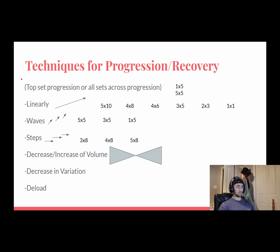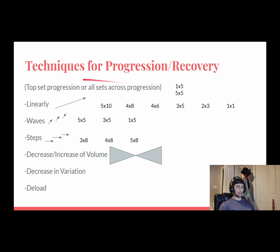Here are different techniques for progression. Once you've found your exercises, you apply a progression method. You don't have to strictly follow any one of these. For example, say on Monday you have a top set of five at higher intensity, then back-off sets at five by five. You can progress just your top sets, or you can go all-sets-across — a straight five by five that you progress each week. Classic linear progression starts at five by ten in week one and slowly decreases volume while increasing intensity over time.